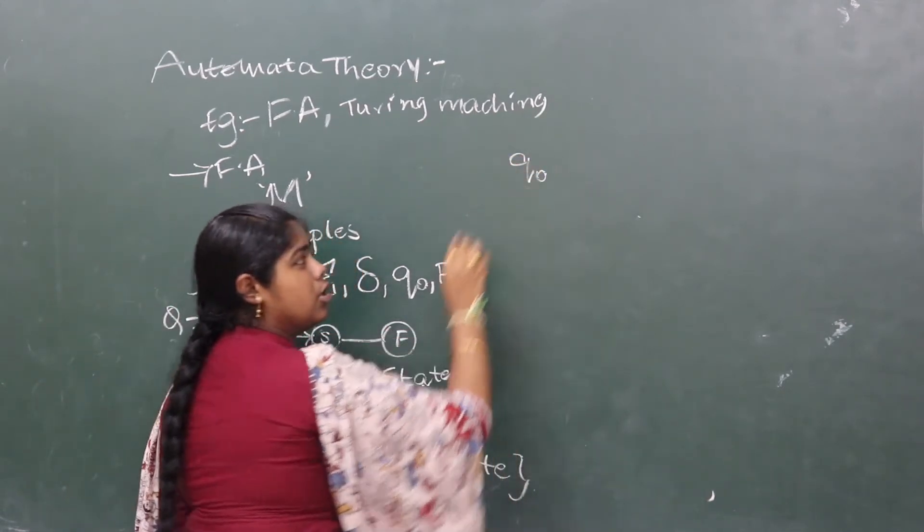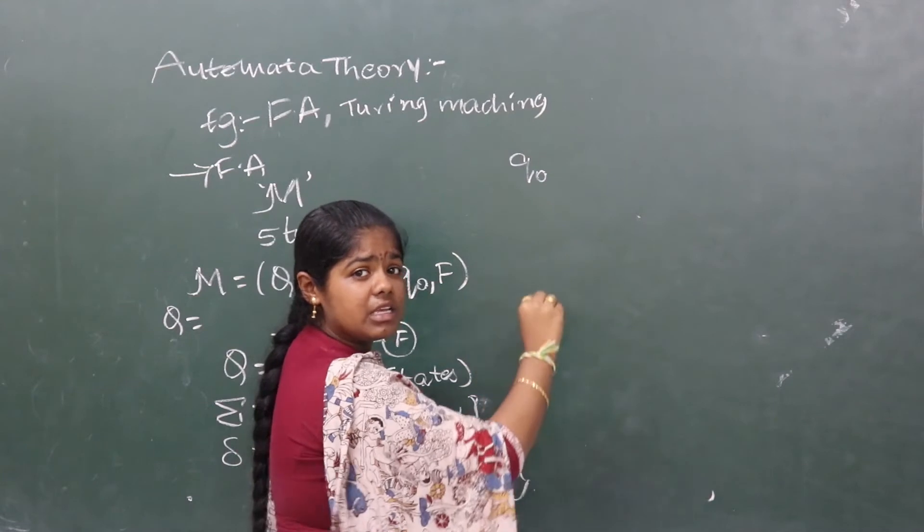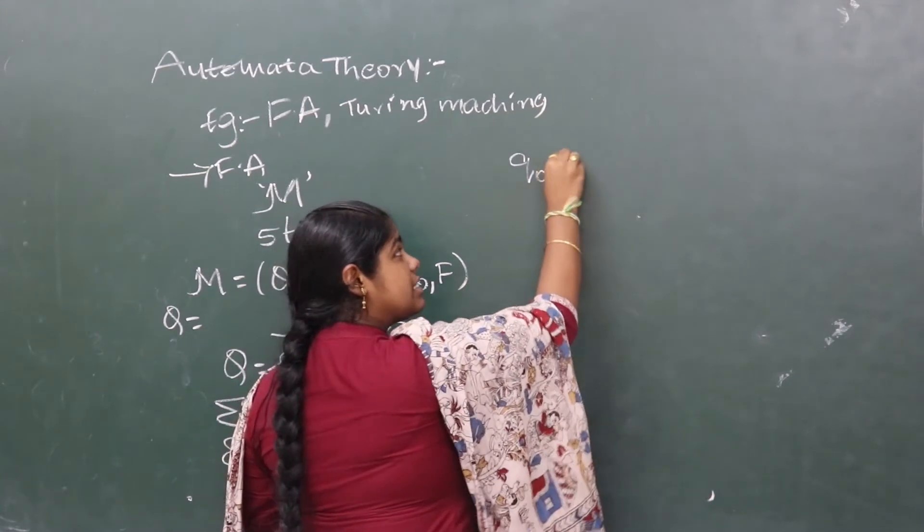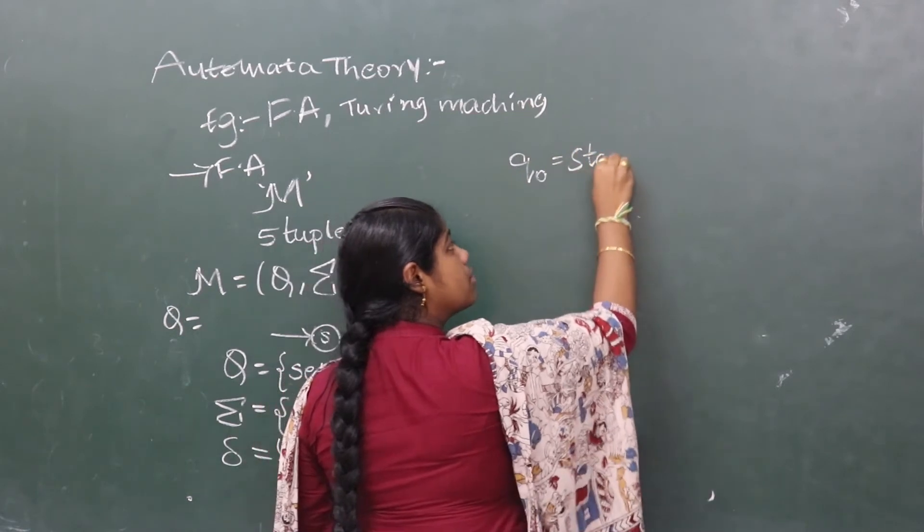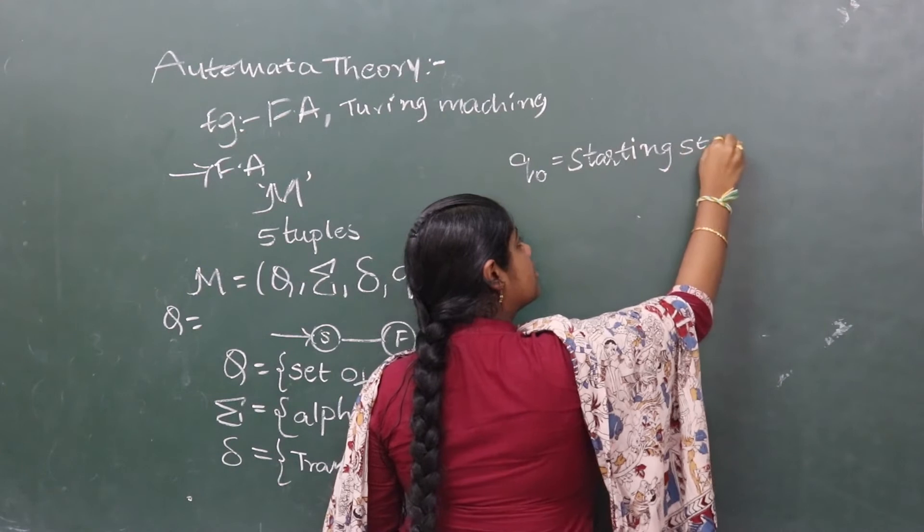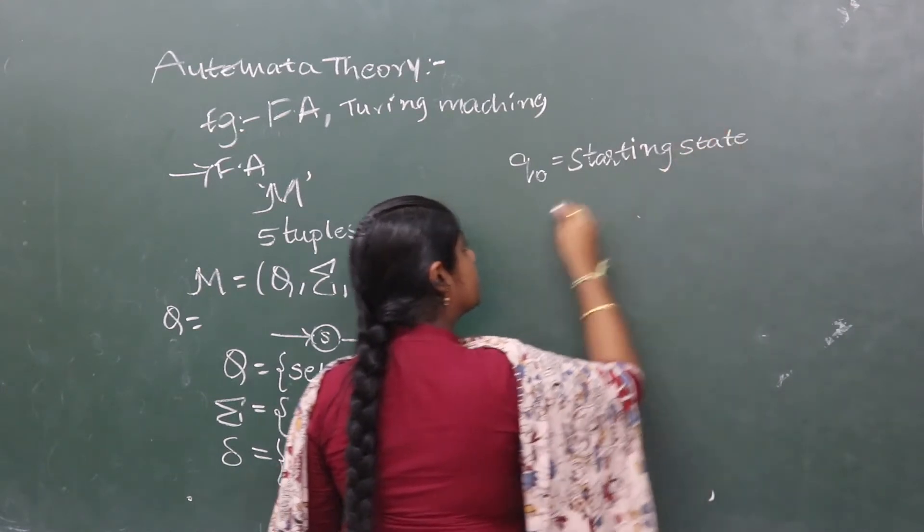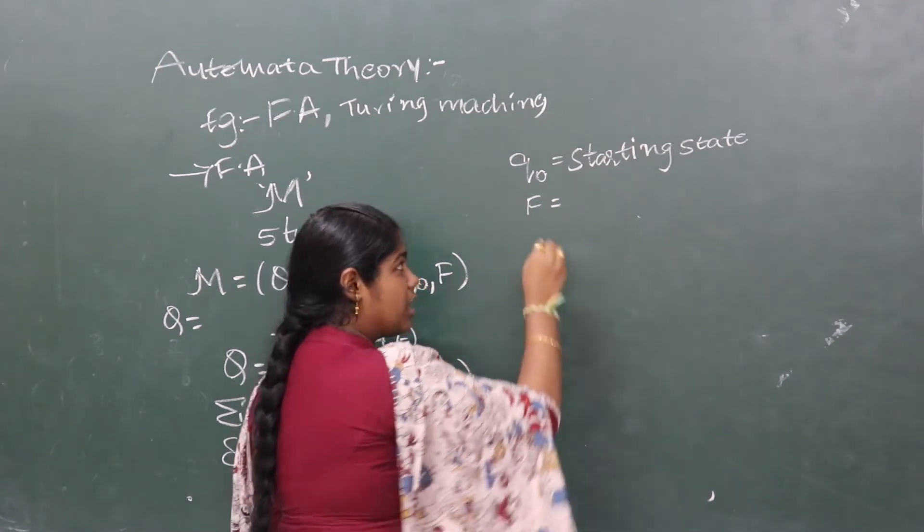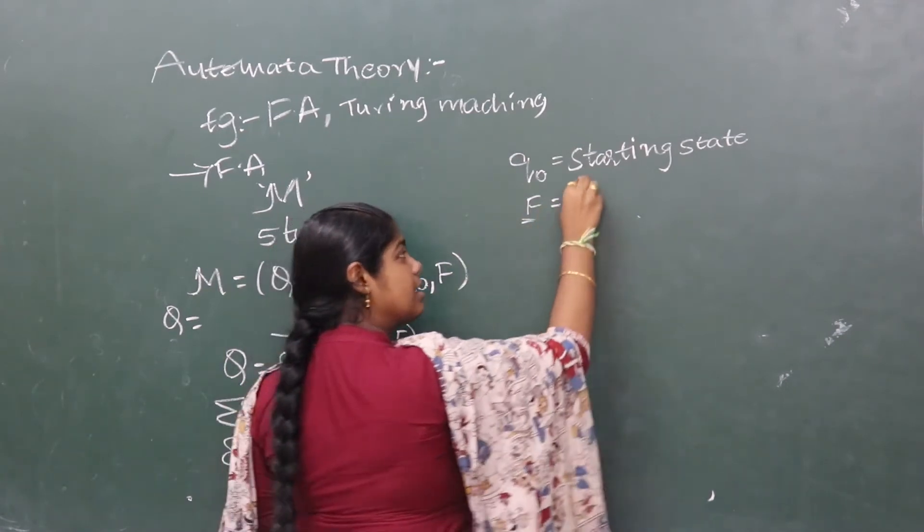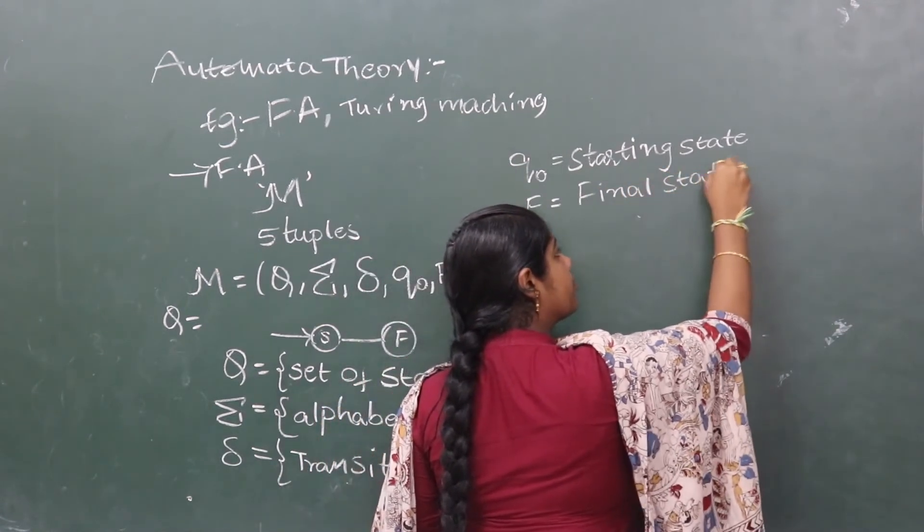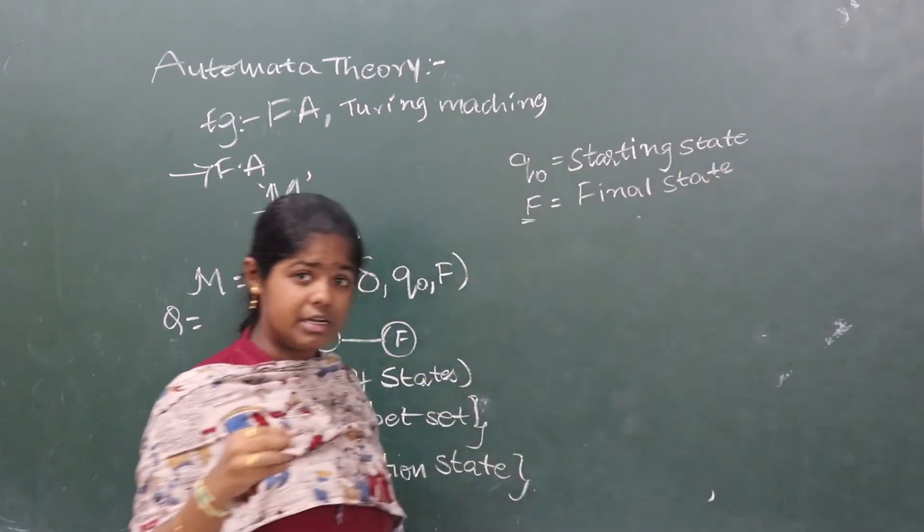Q0 is the starting state. When you're in input, a state is applied first. That state is starting state. So, Q0 represents starting state. F. What is F? Generally, F represents final state.